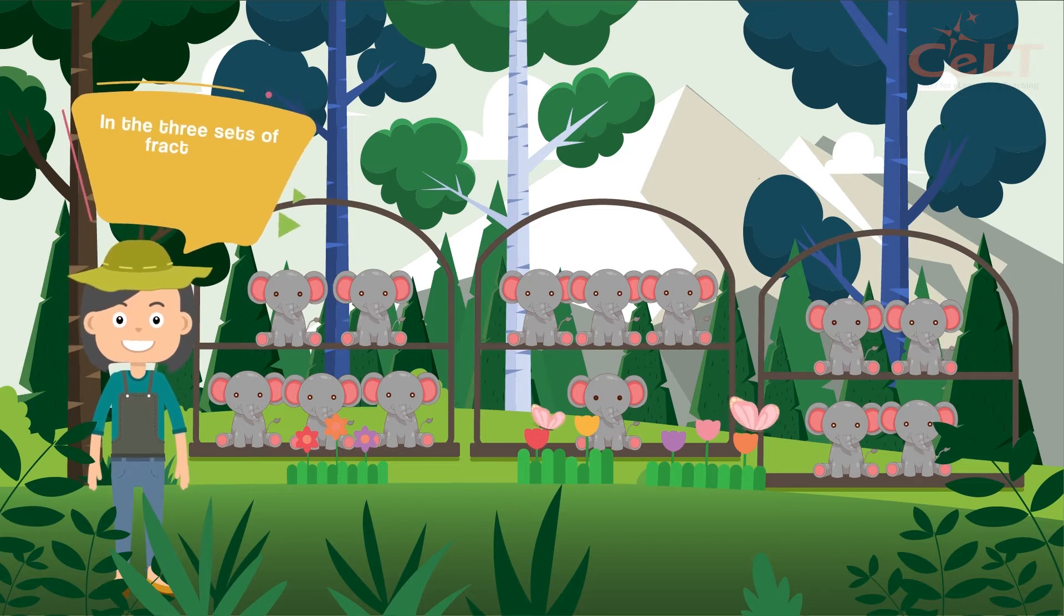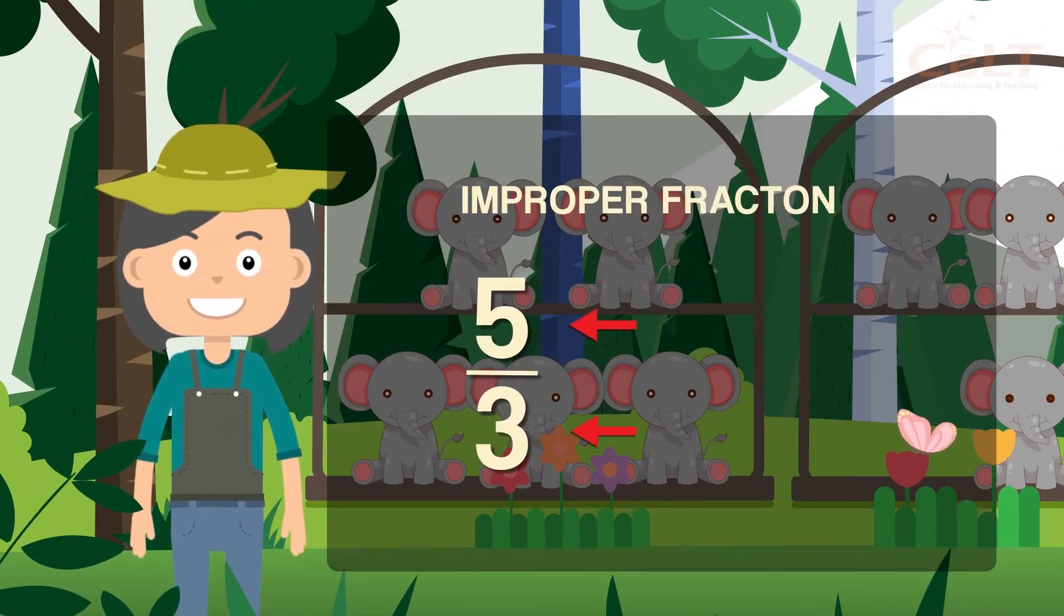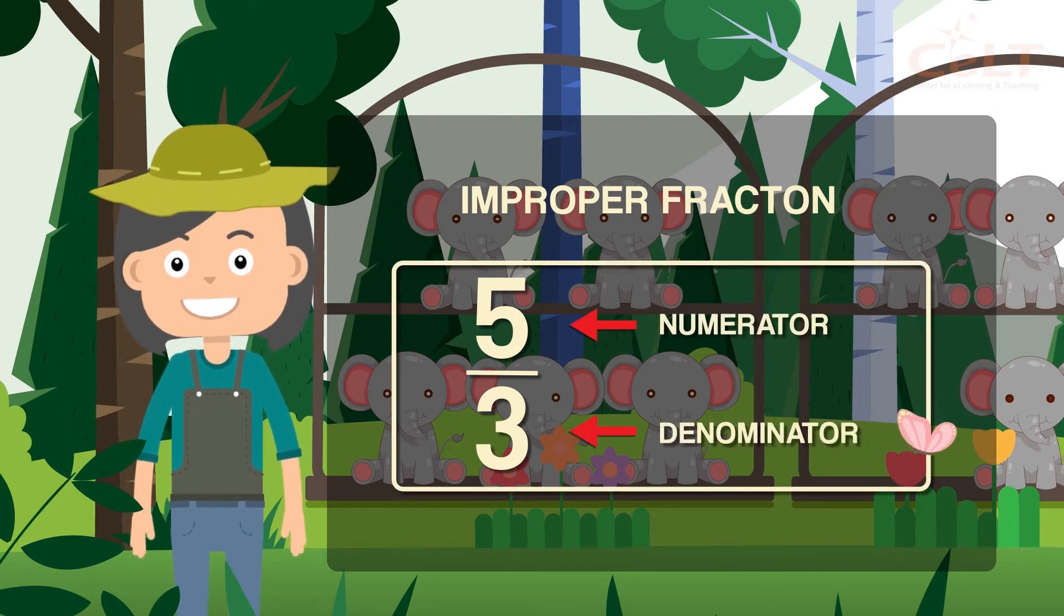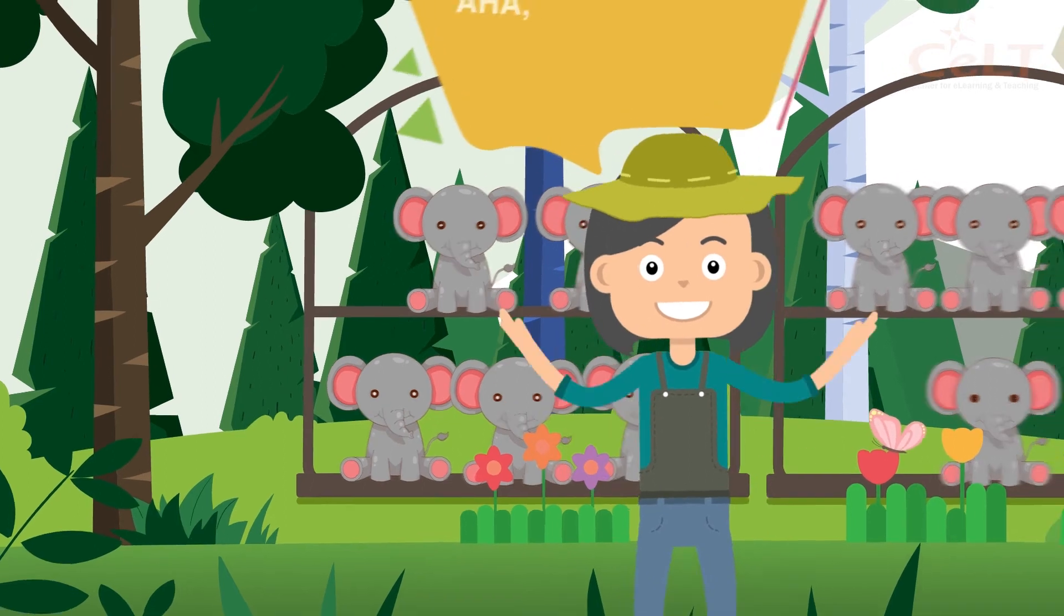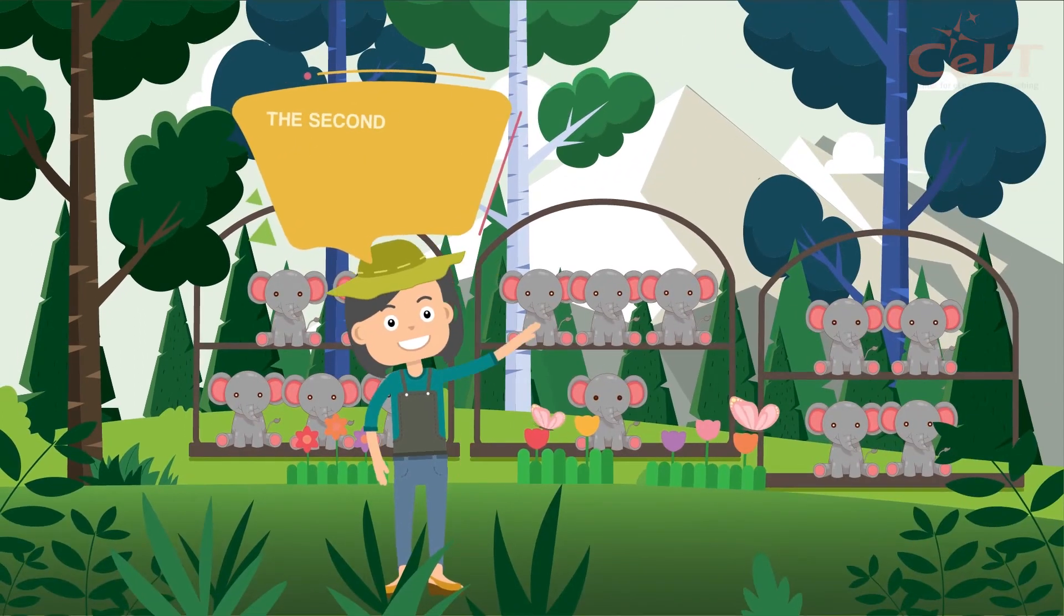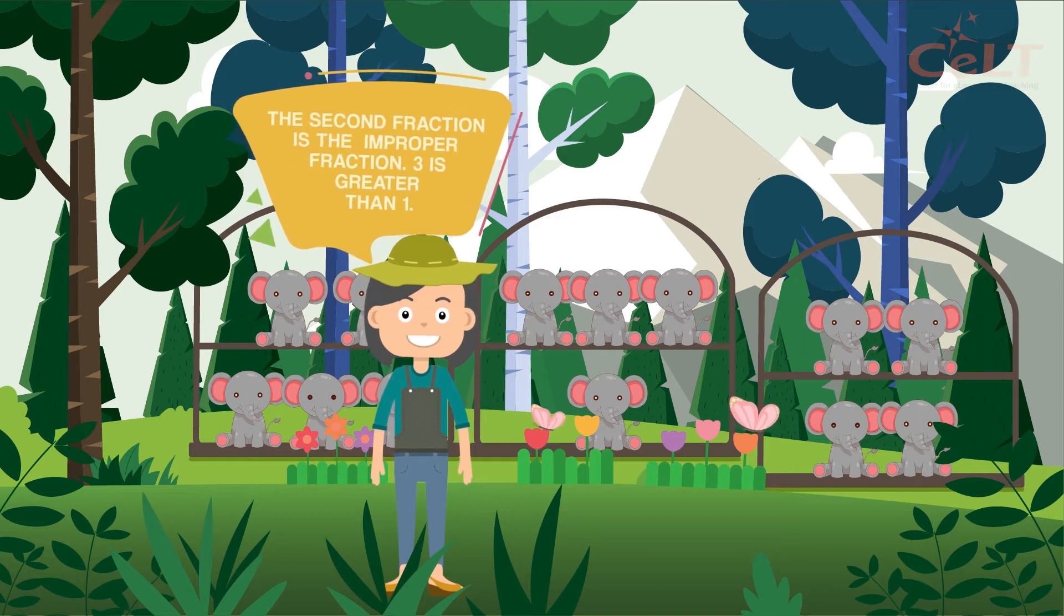In the three sets of fractions, which fraction is an improper fraction? Remember, improper fraction is when the numerator is bigger than the denominator. Aha! That's right! The second fraction is the improper fraction because 3 is greater than 1.